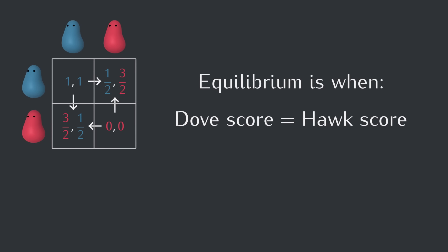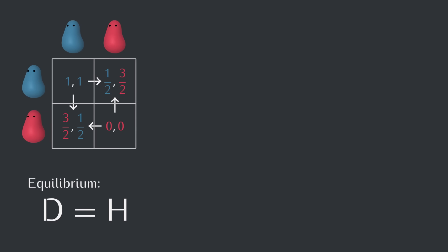Right? Equilibrium is when, on average, we don't expect to change one way or the other, so we can't have one strategy doing better. They're equal. Our goal is to find the fraction of doves that makes this condition true.